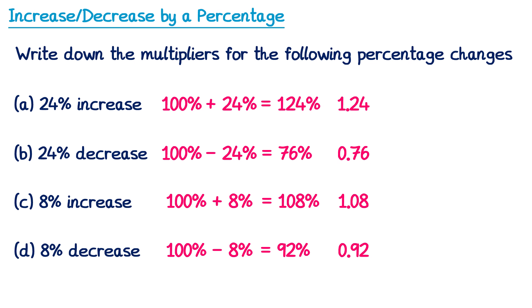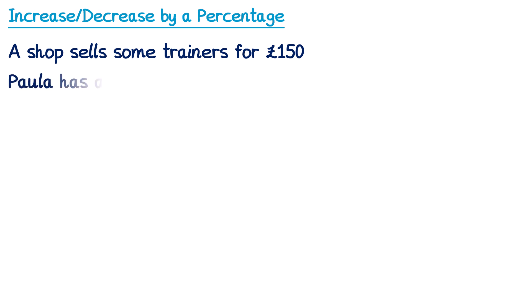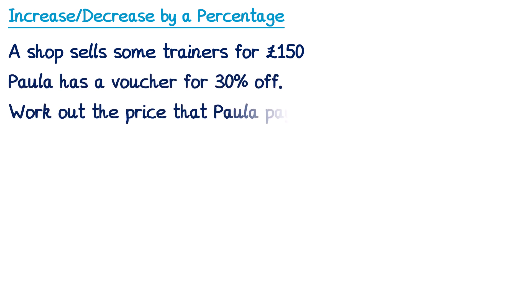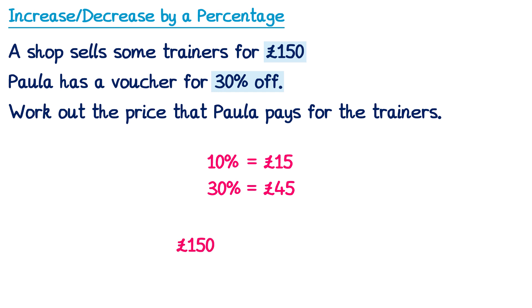Now let's look at a couple of exam-style questions in context. A shop sells some trainers for £150. Paula has a voucher for 30% off — work out the price Paula pays. Since the numbers are nice, we'll find the percentage and subtract it. 10% of £150 is £15; multiplying by 3 gives 30% = £45. Paula gets 30% off, so we subtract: £150 − £45 = £105. Paula pays £105 for the trainers.